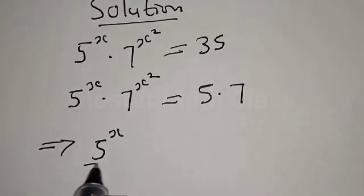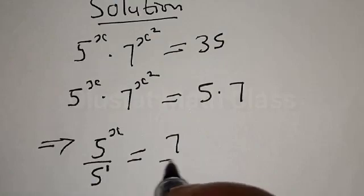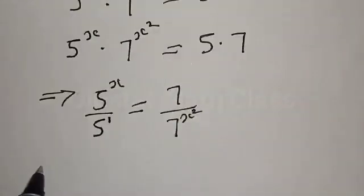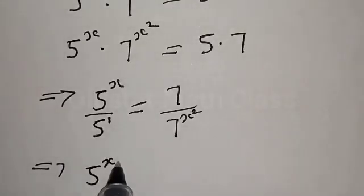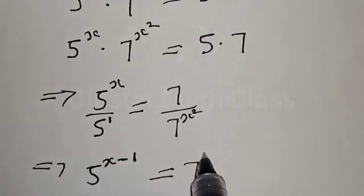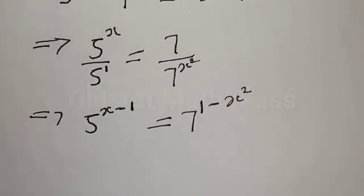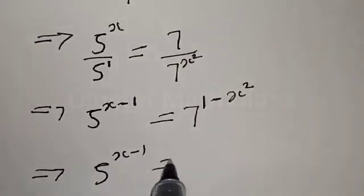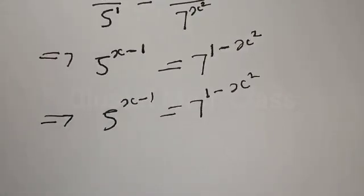This implies that we divide both sides: the 5 terms give 5^(x−1), and from the 7 terms we get 7^(1−x²). So we have 5 raised to power (x minus 1) equal to 7 raised to power (1 minus x²).